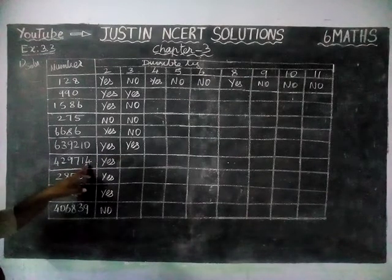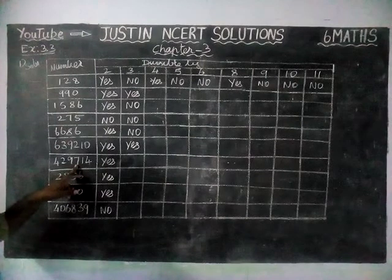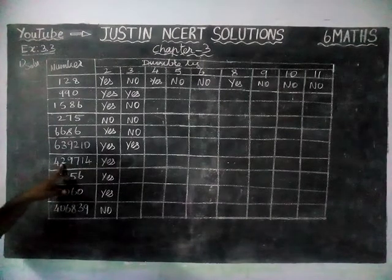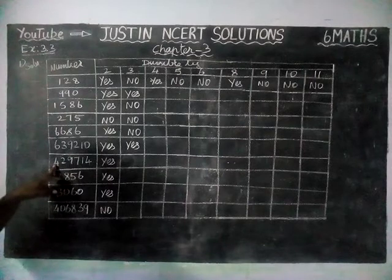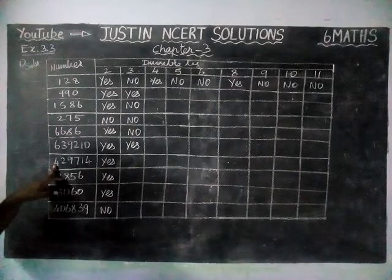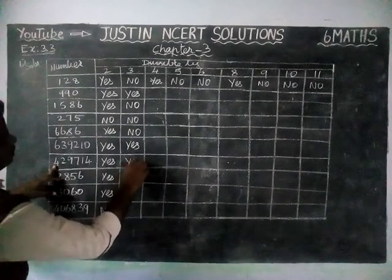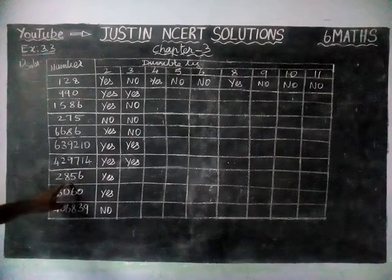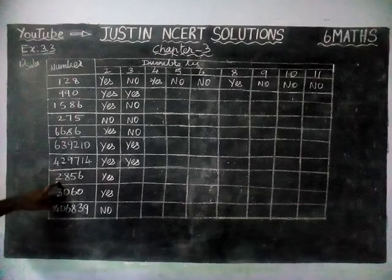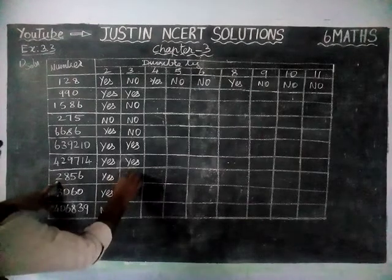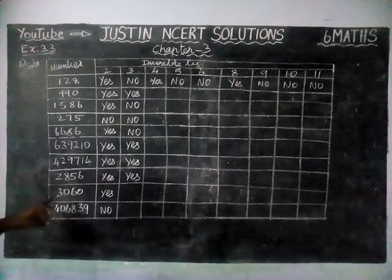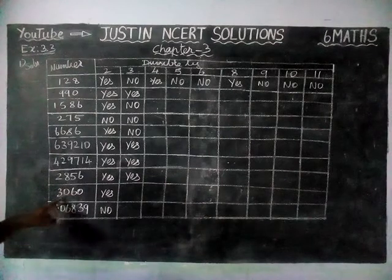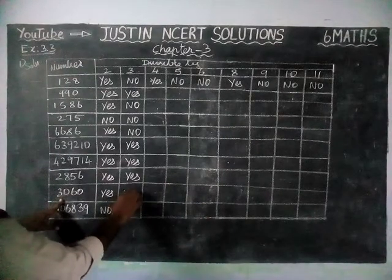Next: 4 plus 1 is 5, 5 plus 7 is 12, 12 plus 9 is 21, 21 plus 2 is 23, 23 plus 4 is 27. 27 is divisible by 3 — 9 threes are 27 — so this number is divisible by 3. Next: 6 plus 5 is 11, 11 plus 8 is 19, 19 plus 2 is 21. 21 is divisible by 3, therefore the number is divisible by 3. Next: 6 plus 3 is 9 — 9 is divisible by 3 — so this number is divisible by 3, yes.